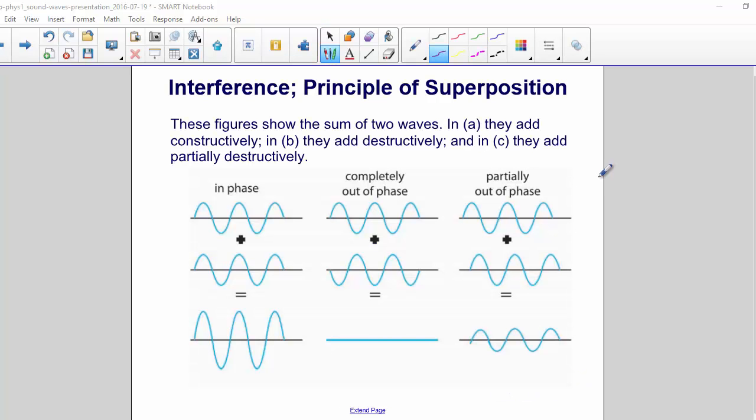Interference. These figures show the sum of two waves. They add constructively when they are in phase, so a crest lines up with a crest and a trough with a trough.